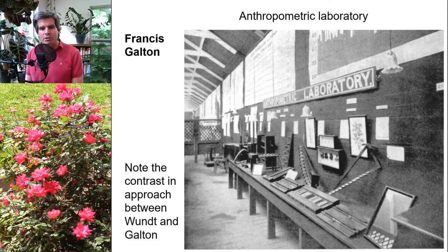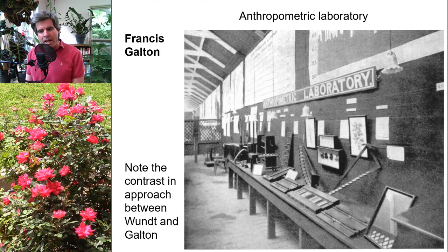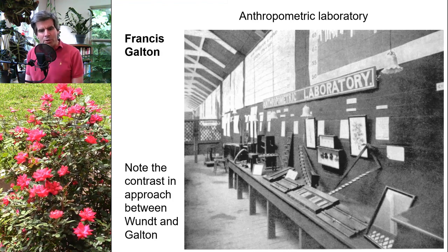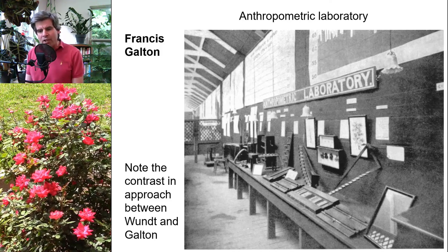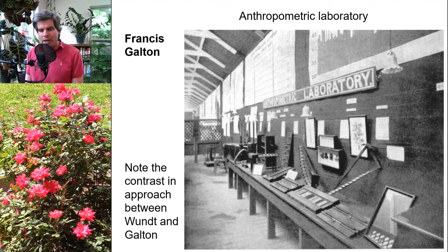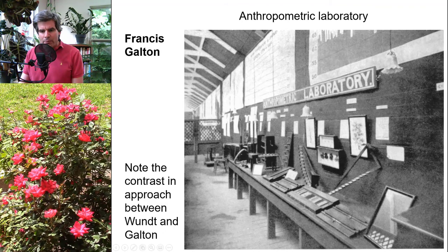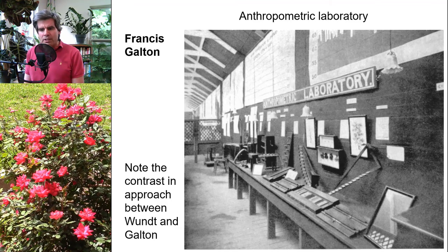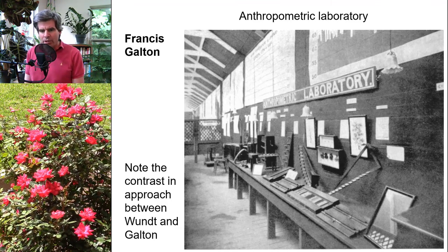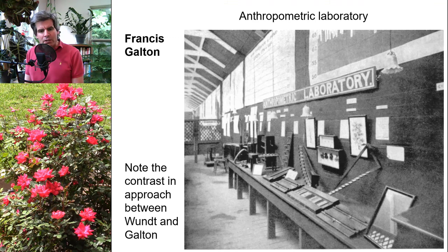Galton just did what he wanted to do — he studied and investigated things with very broad interests. He developed weather maps, recognized the uniqueness of fingerprints, invented an early teletype machine, developed periscopes, and developed underwater spectacles for divers. A key event in our story is that in 1884, Galton opened something he called his anthropometric laboratory, pictured on screen. At his anthropometric laboratory, Galton conducted studies and collected an immense amount of data on individual differences.